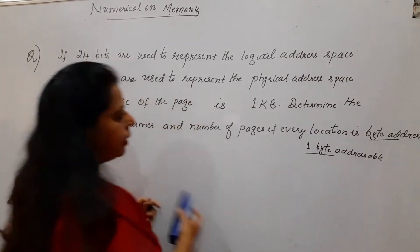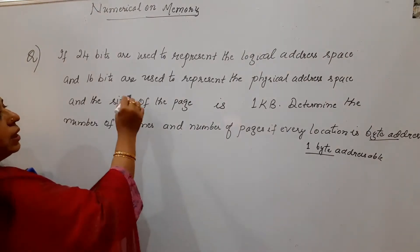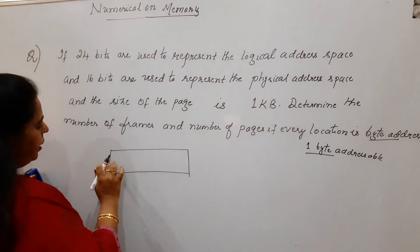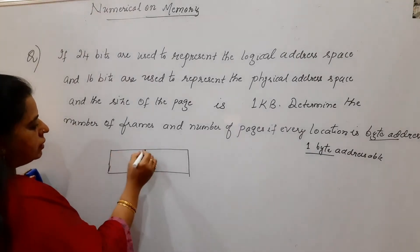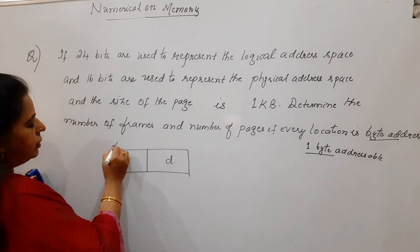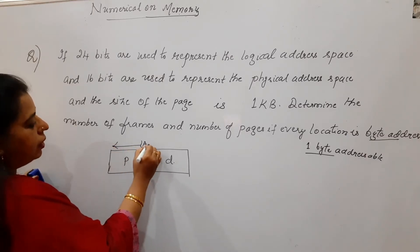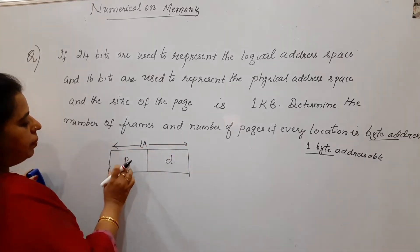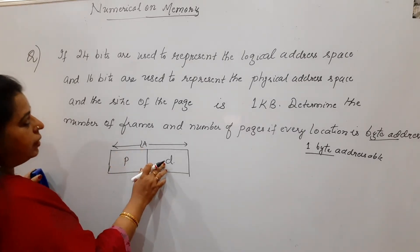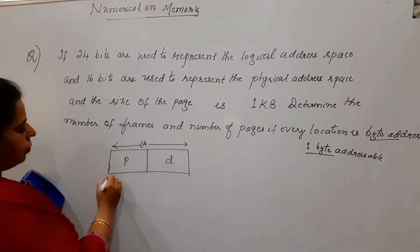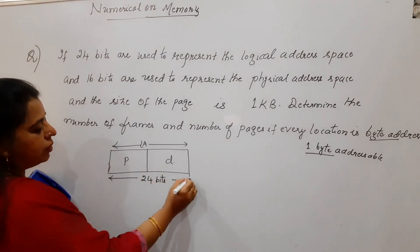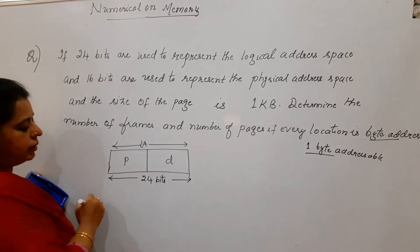How do you solve this numerical? 24 bits are used to represent the logical address space. The logical address consists of 2 components: one is the page number and another is the displacement. For this logical address, 24 bits are used.